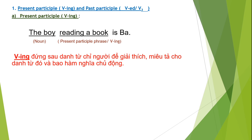Ghi chú: present participle còn gọi là verb -ing thì nó sẽ đứng sau danh từ chỉ người để giải thích, miêu tả cho danh từ đó, và bao hàm nghĩa chủ động. Tại sao có nghĩa chủ động? Vì chủ thể là người — người sẽ chủ động tác động lên một sự vật hoặc sự việc gì đó.